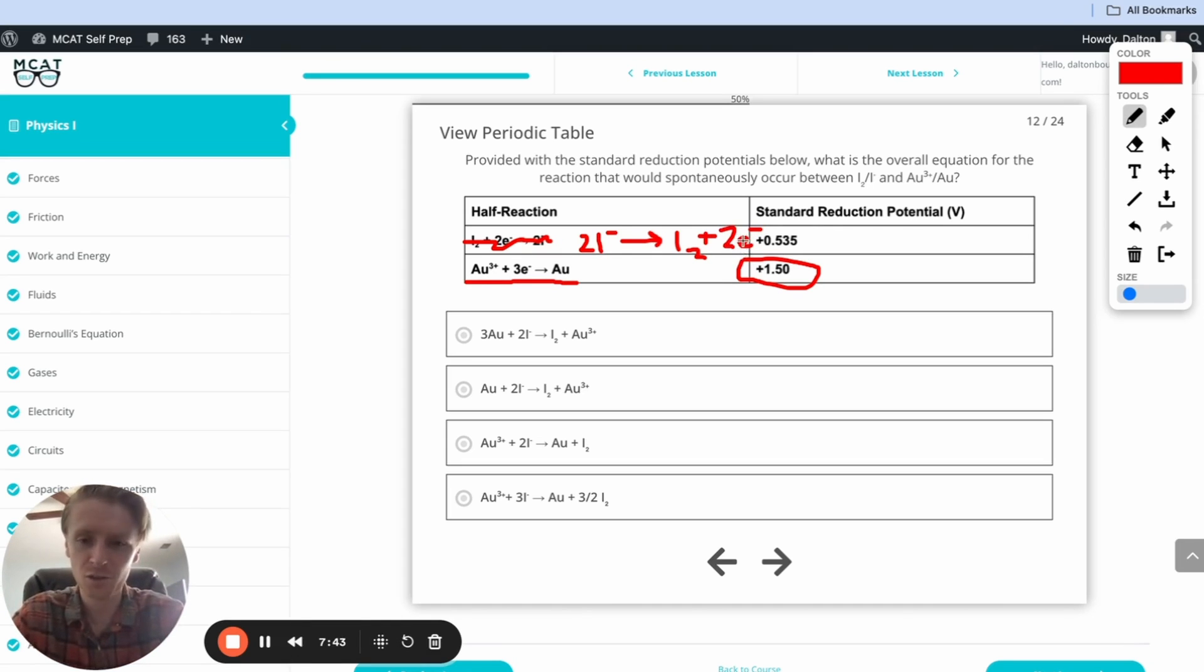So we have two electrons right here, two e⁻, and we have three right here. So that's not going to work. The way we can do this is just pretty simple. We'll multiply the bottom by two. We'll multiply this reaction right here by three, and that way we can balance these out.